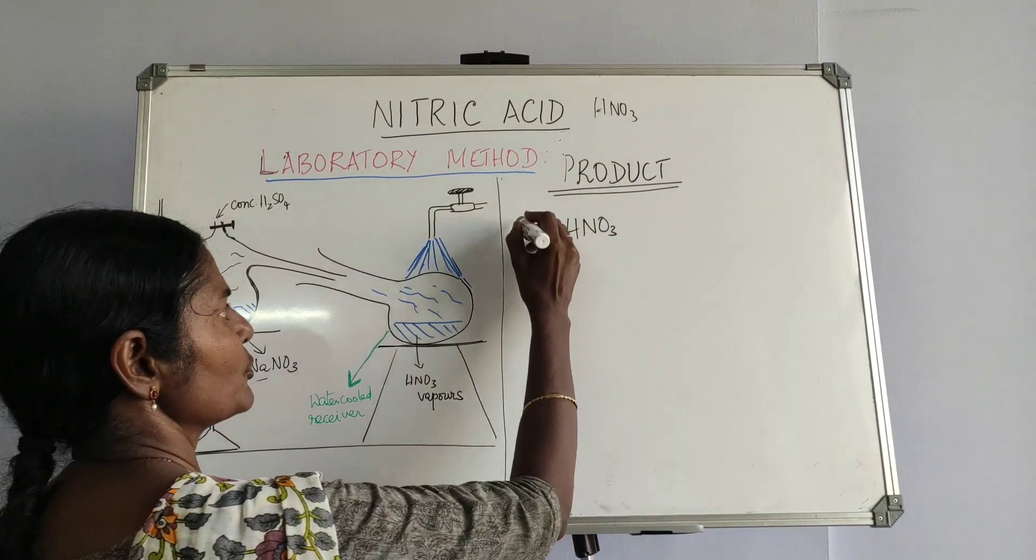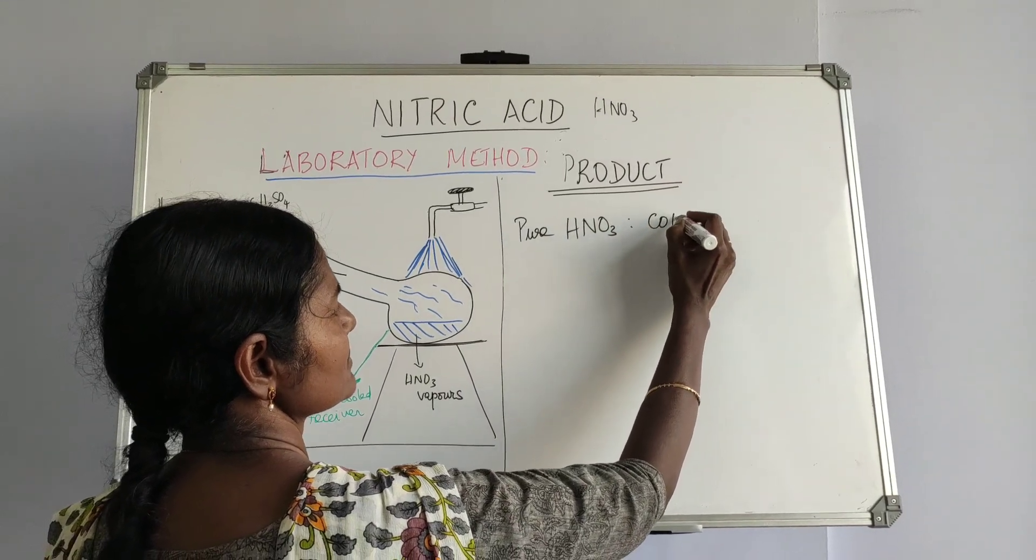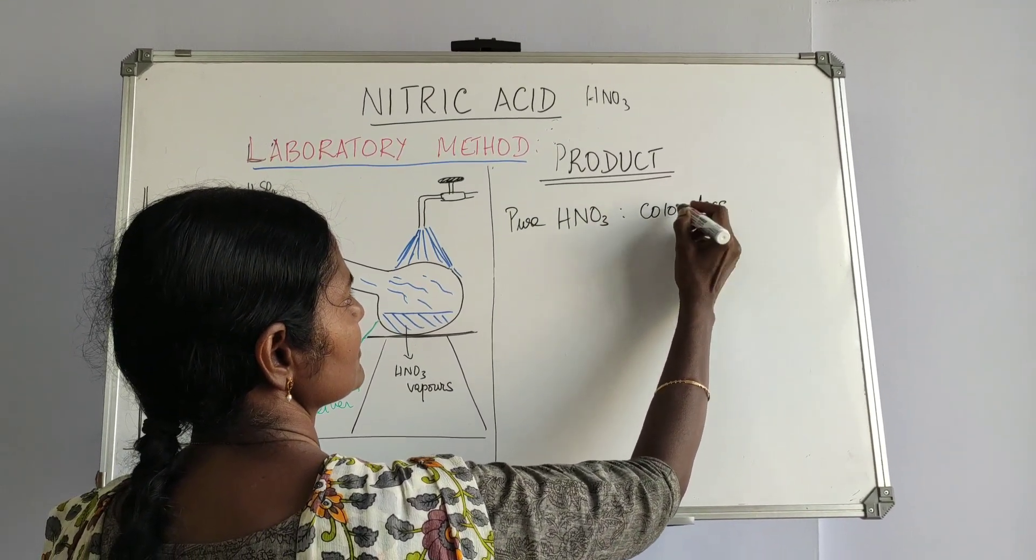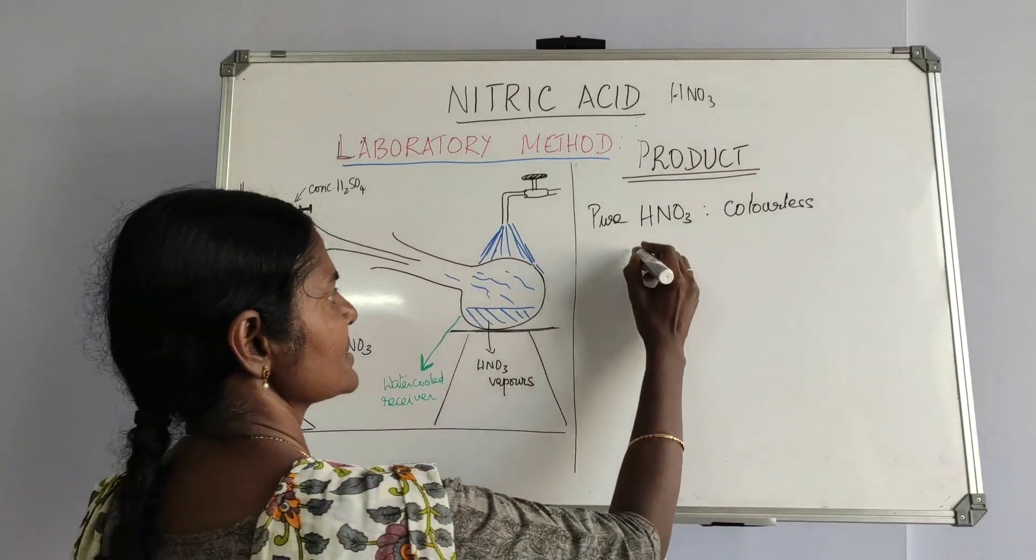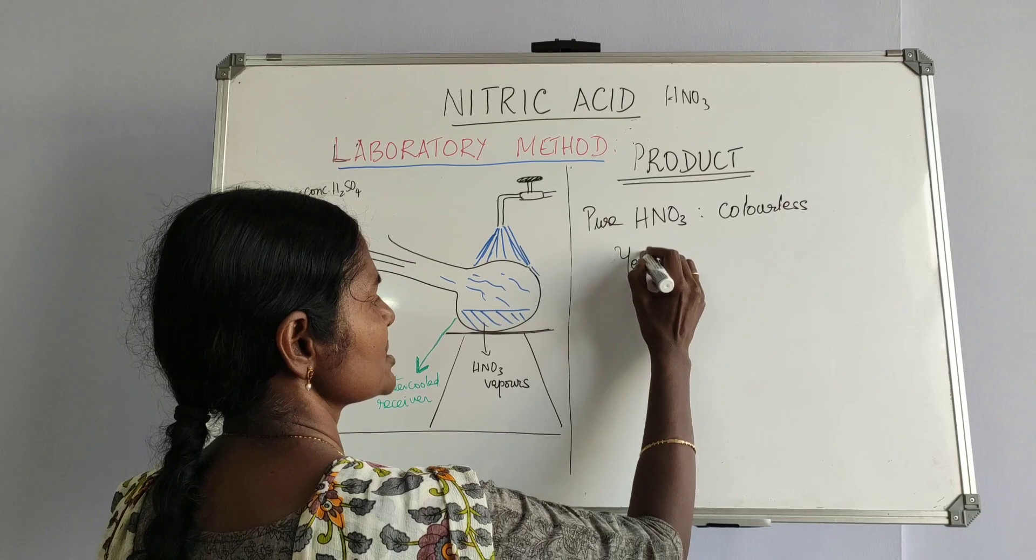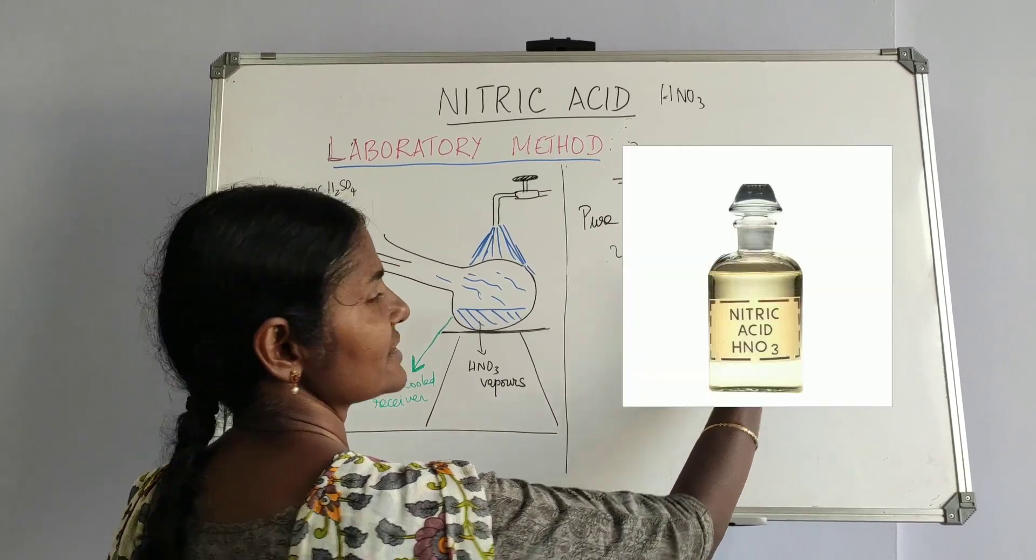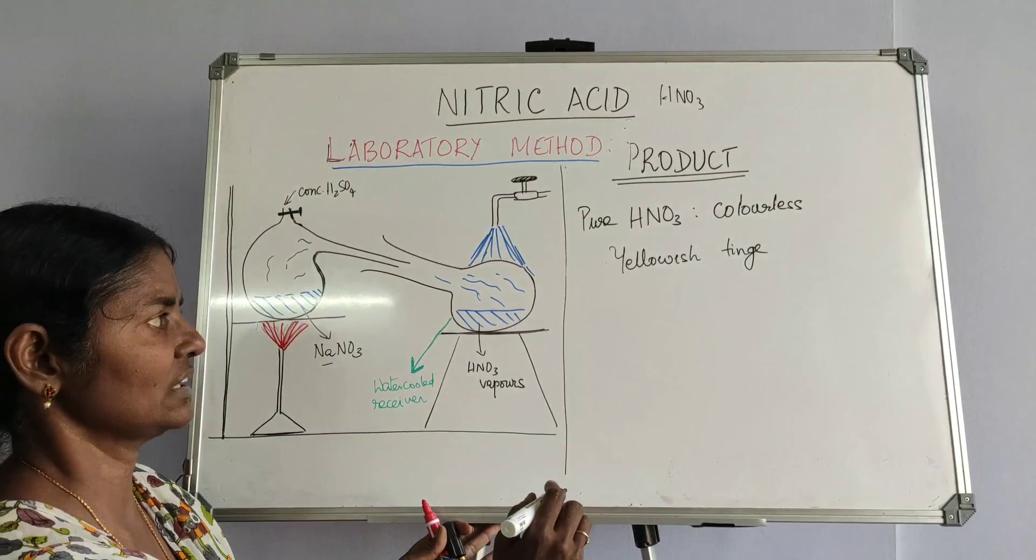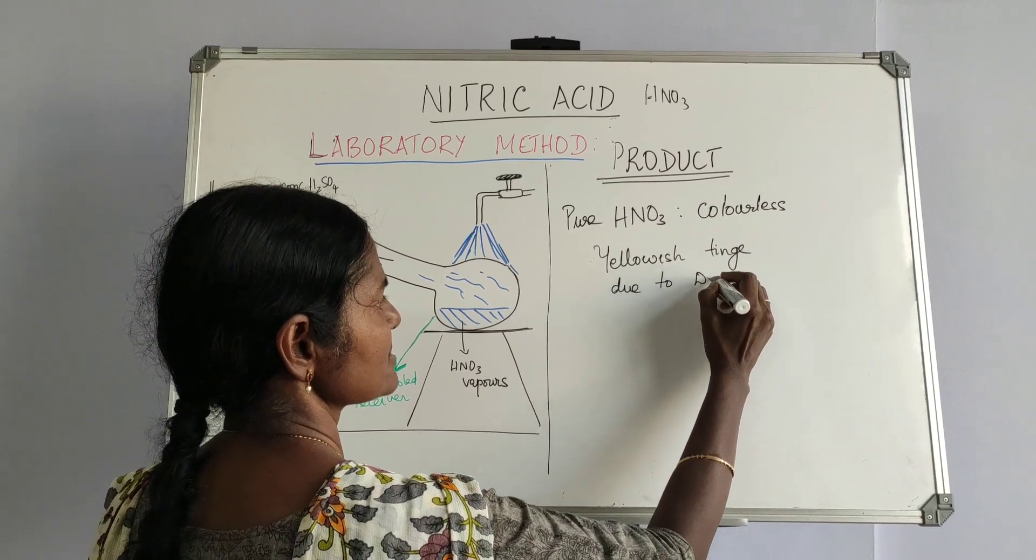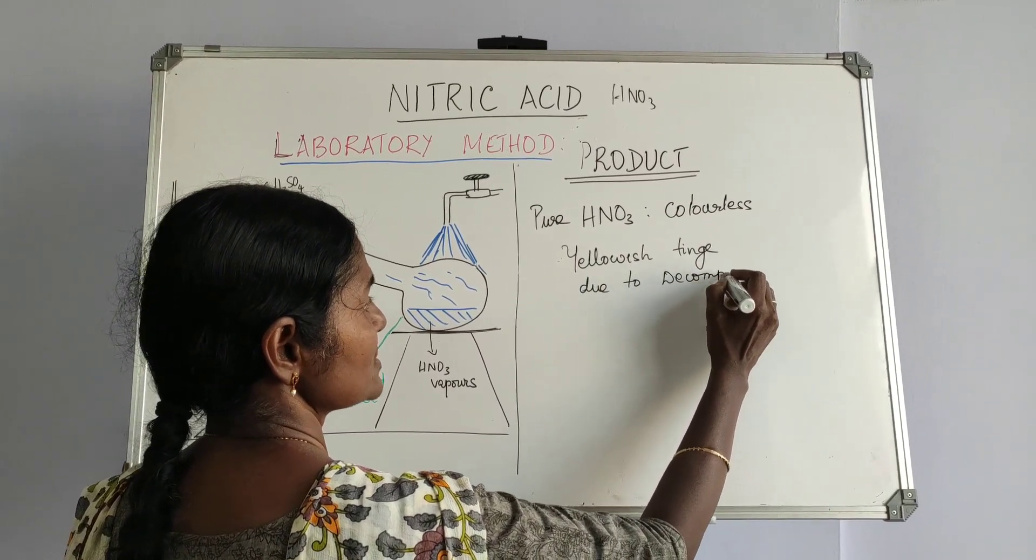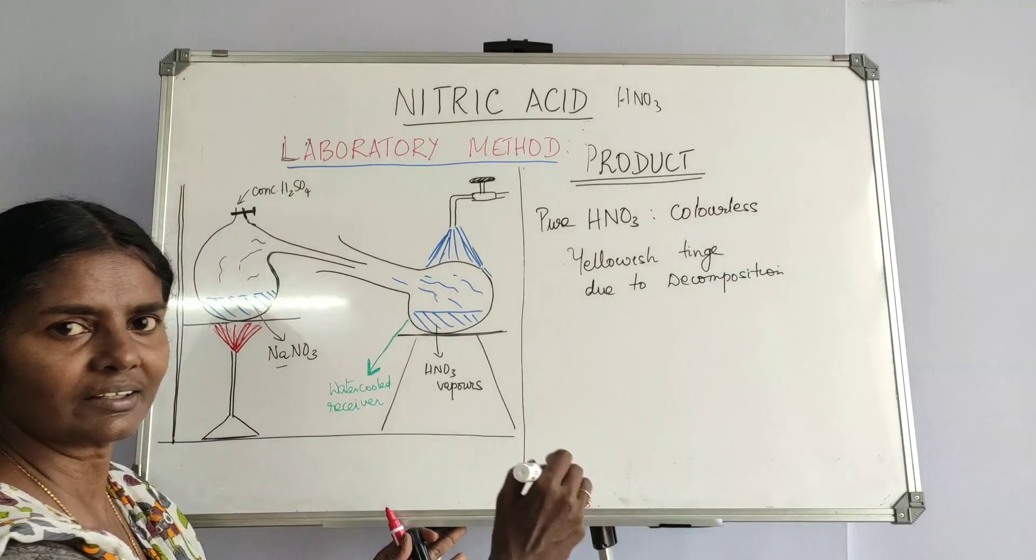And pure nitric acid is colorless. But when you leave it on standing, it gets an yellowish tinge. That's why in the laboratory, when you see nitric acid, it's slightly yellow in color. This is due to decomposition of nitric acid. It's volatile. So it evaporates faster and it decomposes.